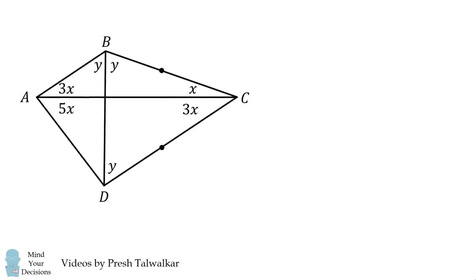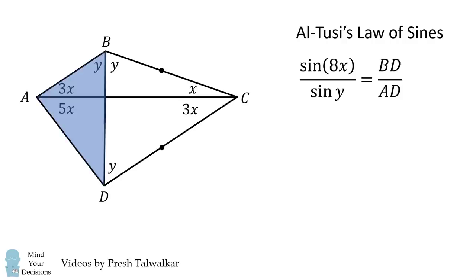From here, we will repeatedly use Al-Tusi's Law of Sines. First, consider triangle ABD. We have that the sine of 8X over the sine of Y is equal to BD over AD.